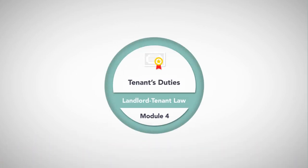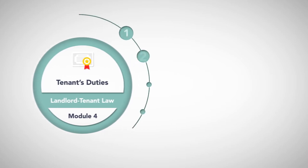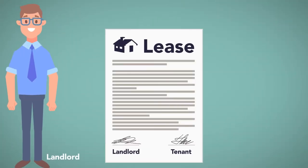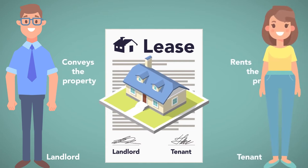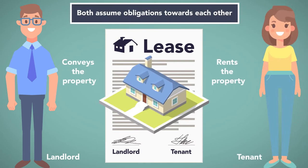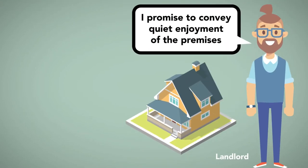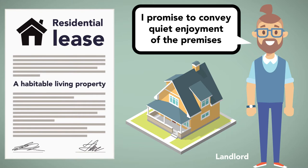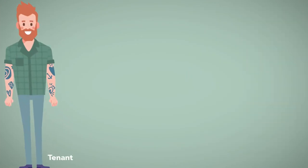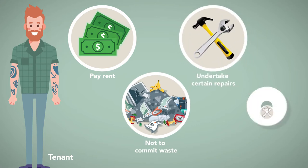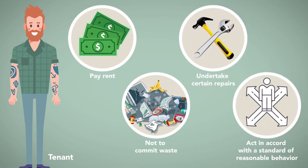Module 4: Tenant's Duties. When two parties agree to a lease, the landlord who conveys the property and the tenant who rents the property both assume obligations towards each other. The landlord promises to convey quiet enjoyment of the premises, and when it is a residential lease, a habitable living property. In return, the tenant assumes the obligations to pay rent, not to commit waste, to undertake certain repairs, and to act in accord with the standard of reasonable behavior.